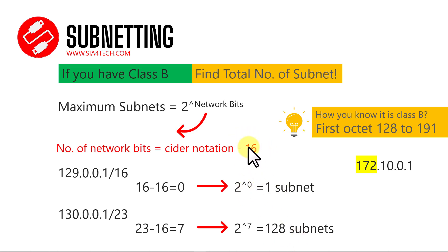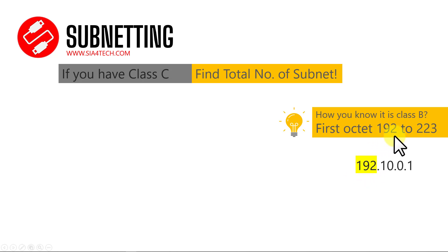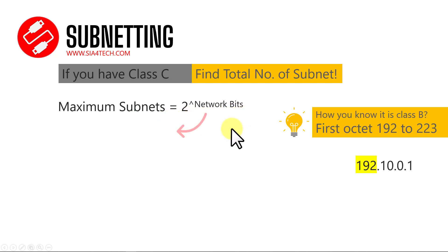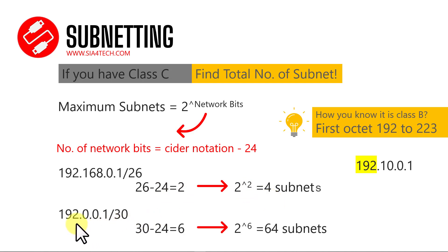For Class C, the first octet is between 192 and 223. The formula is: maximum subnets = 2 to the power of (CIDR minus 24). For example, 192.x.x.x /26: 26 minus 24 equals 2, so 2 to the power of 2 equals 4 subnets. Another example: 192.x.x.x /30 — 30 minus 24 equals 6, so 2 to the power of 6 equals 64 subnets. This way we can find the total subnets and total hosts in any network. I hope this video was useful — see you in my next video.